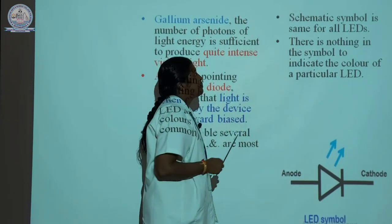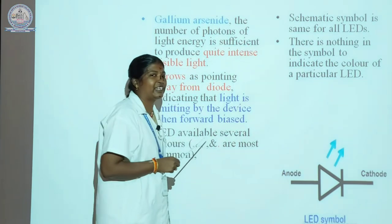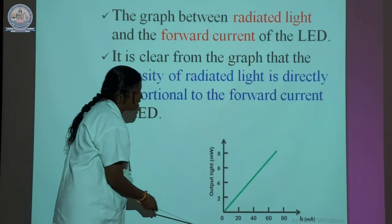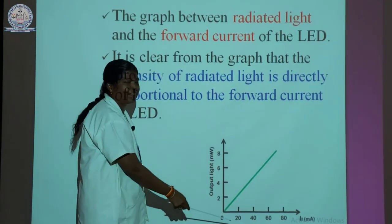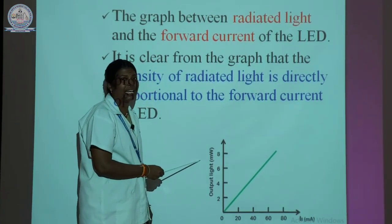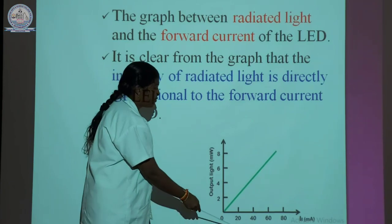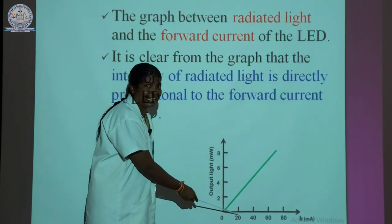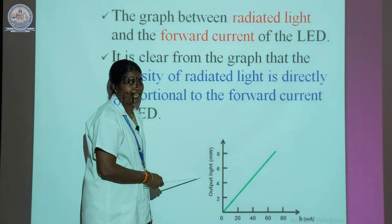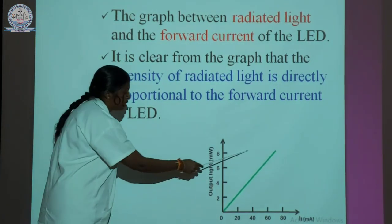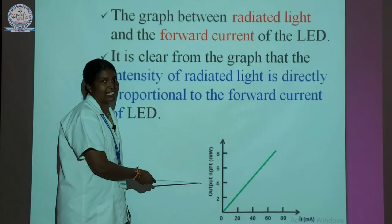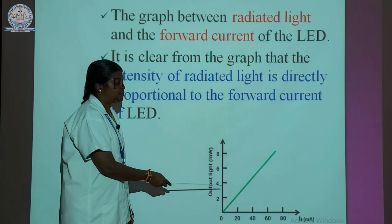The schematic symbol is the same for all LEDs — there is nothing in the symbol to indicate the color of a particular LED. The graph is drawn between forward current on the x-axis and output radiated light on the y-axis. It is clear from the graph that the intensity of radiated light is directly proportional to the forward current.